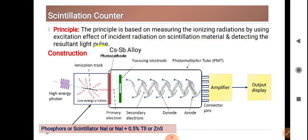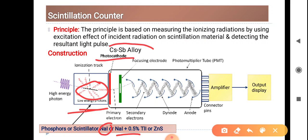Coming to the construction, it consists of a phosphor or scintillation chamber. This phosphor material is made up of sodium iodide, or sodium iodide with 0.5% thallium iodide, or zinc sulfide. It is connected with the photocathode, which is made up of cesium-antimony alloy.